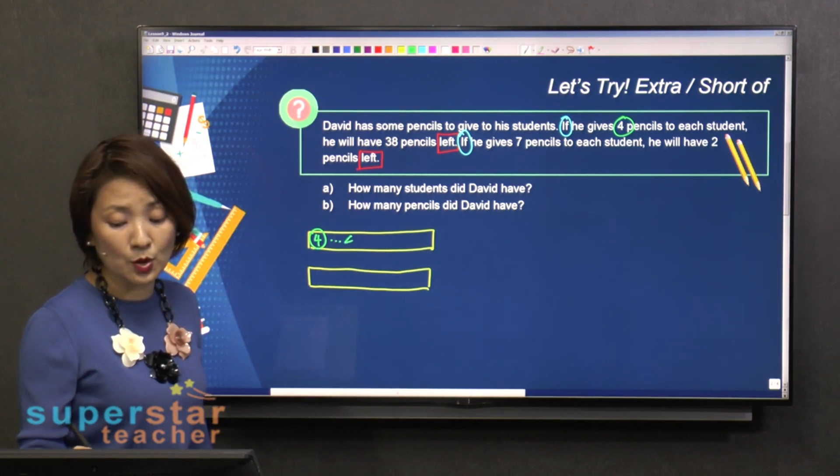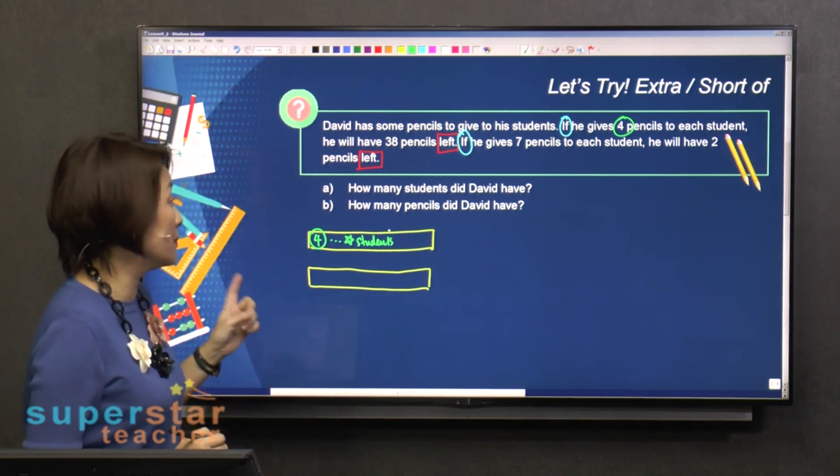I don't know. So put dot, dot, dot. I don't know number of students. Always write the unit because it will help you.